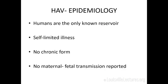Humans are the only known reservoir. It's a self-limited illness with no chronic form. Going back to the opening question — there is really no maternal-fetal transmission reported. Several case series from Taiwan and China looked at mothers at various stages of pregnancy with acute hepatitis A, and they did not transmit to their babies. There are a couple of case reports of babies infected in the early neonatal period, but vertical transmission wasn't clearly established — it could have been postpartum. That's why we don't worry about it and don't screen for it during pregnancy.